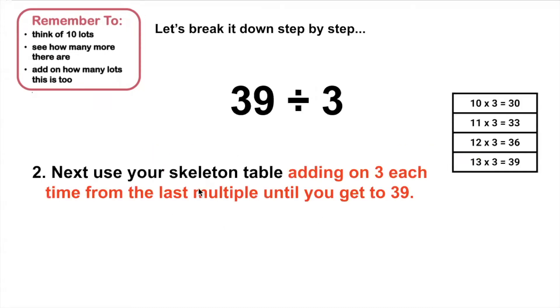I would then use my skeleton table, adding on 3 this time, until I get to 39. So I'm going to start on my skeleton table on the right, using my 10 lots of 3, which is 30. And add on 3 each time until I get to 39.